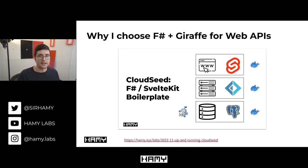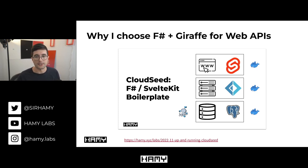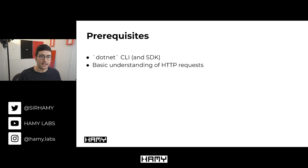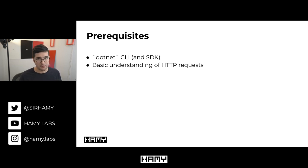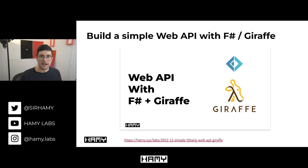If you want to know more about why I like F-sharp and Giraffe for web APIs and use it for most of my new projects, you can check out a linked video, but it's out of scope for this one. To follow along, you will need the .NET SDK and the command line client, which you can get from Microsoft. I'm also assuming a basic understanding of HTTP requests - just know that this is how most services communicate on the web.